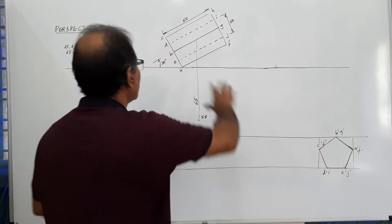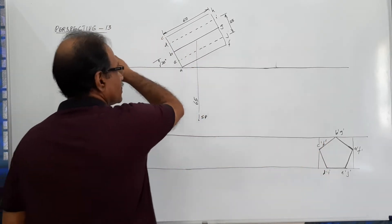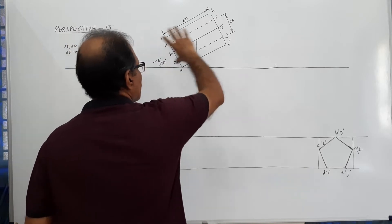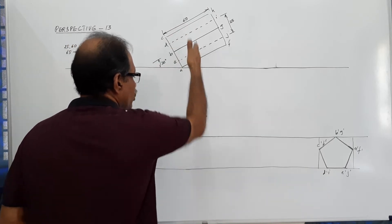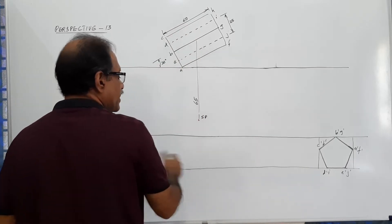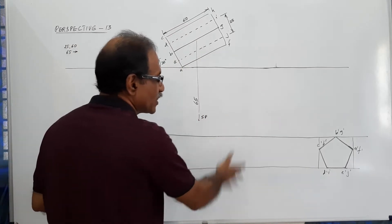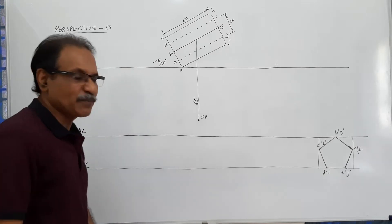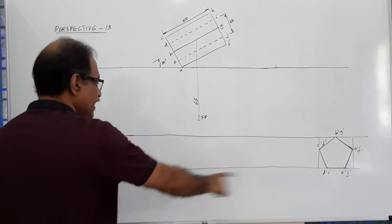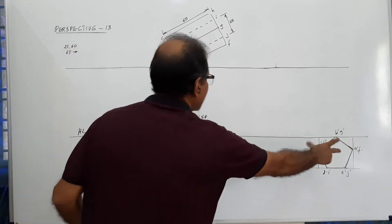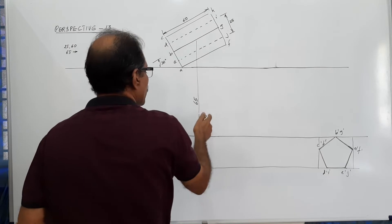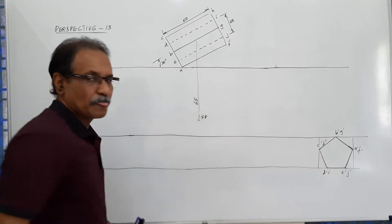You have drawn the plan of the object. Then locate the station point. Draw GL, draw pentagon, draw HL, take this width, construct a plan, locate SP.